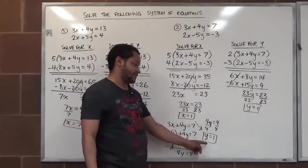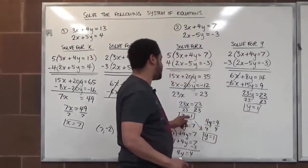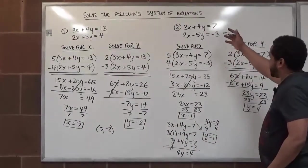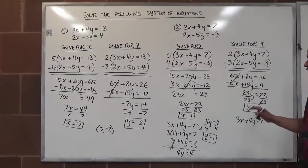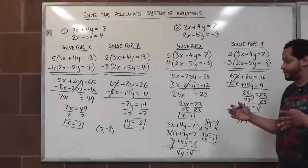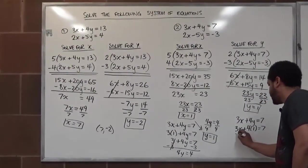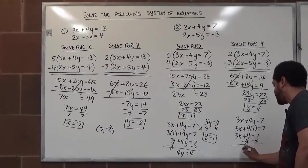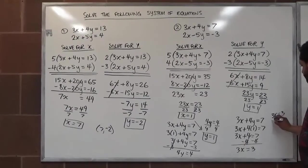Our y solution matches what we got by substitution — confirming accuracy. Now let's check: substituting y equals 1 into the first original equation gives 3x plus 4 times 1 equals 7, so 3x plus 4 equals 7. Subtracting 4 from both sides gives 3x equals 3, and dividing by 3 gives x equals 1 — matching our x solution perfectly.